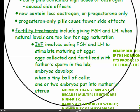Fertility treatments are the opposite of the contraceptive pill — they're about helping people to have children. Fertility treatments include giving FSH and LH when the woman's natural levels are too low for an egg to successfully mature. In IVF, you need to learn the sequence of steps: first, FSH and LH are used to stimulate the maturing of the eggs. Next, the eggs are collected and fertilised with the father's sperm in the lab. Next, the embryos are allowed to develop. Then, when they're a tiny ball of cells, one or two embryos are put into the mother's uterus where, hopefully, they'll develop into a fetus.